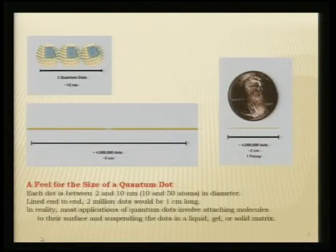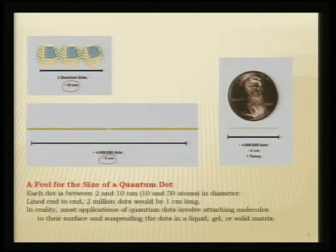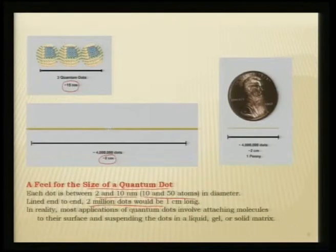In quantum confinement, 3 quantum dots span about 15 nanometers. An array of 4 million quantum dots constitutes only about 2 centimeters. Each quantum dot is between 2 and 10 nanometers or 10 to 50 atoms in diameter; lined end to end, 2 million dots would be 1 centimeter long. These can be prepared by suspending the dots in liquid, gel, or solid matrix.